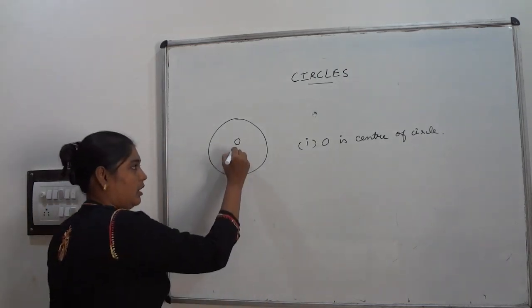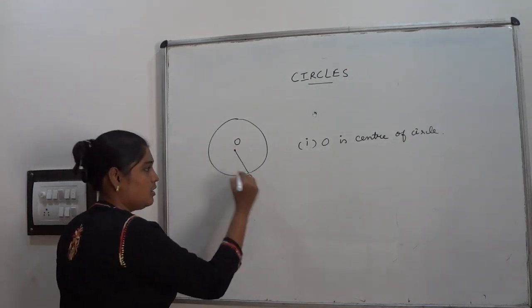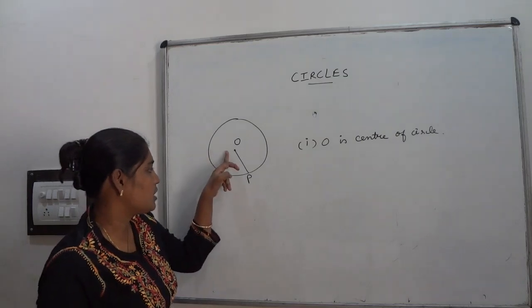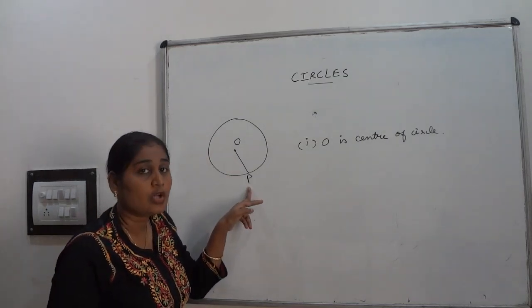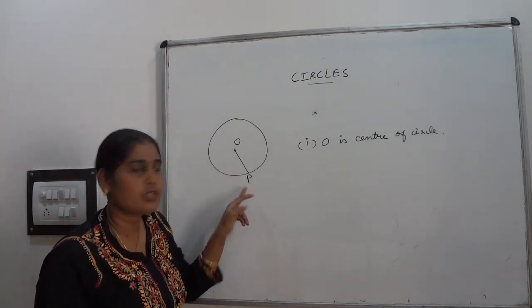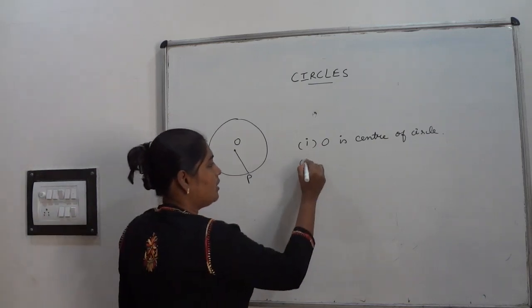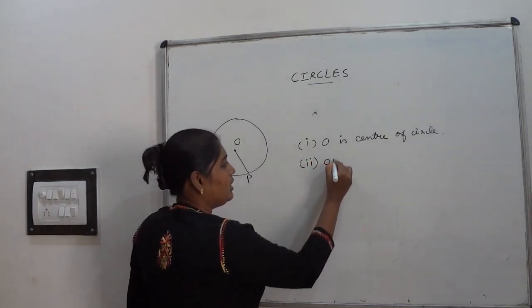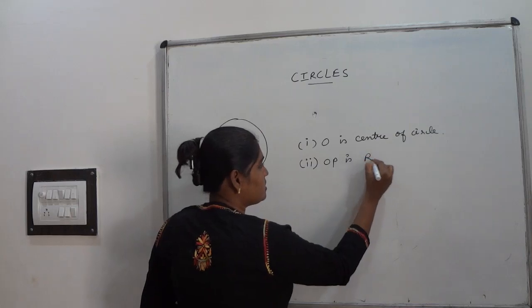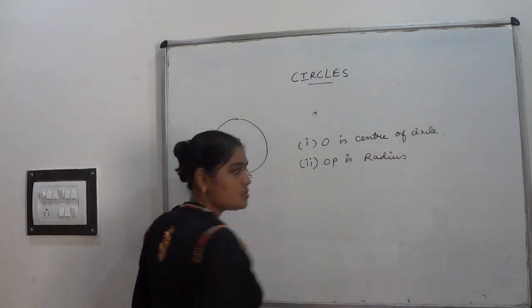Then about the radius. A distance between center of the circle to a point on the circle is called radius of the circle. So marking, OP is radius.